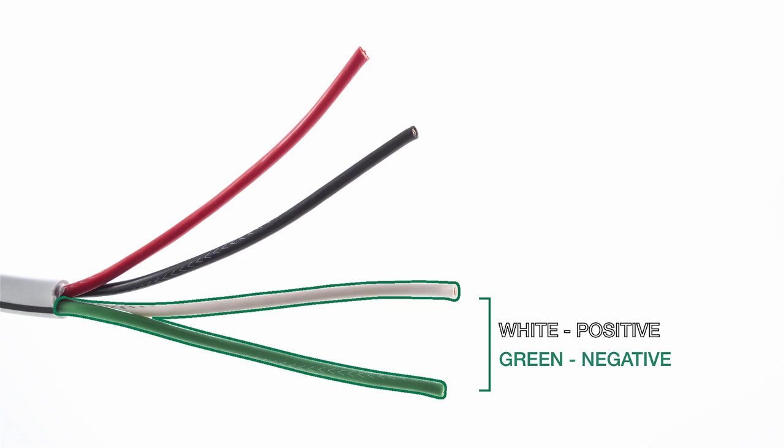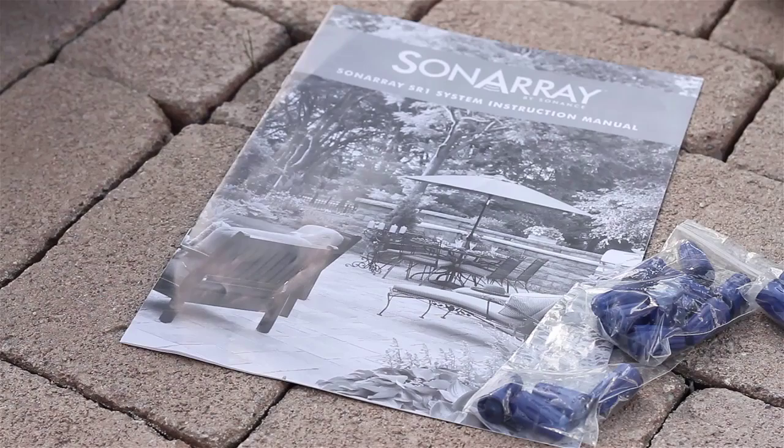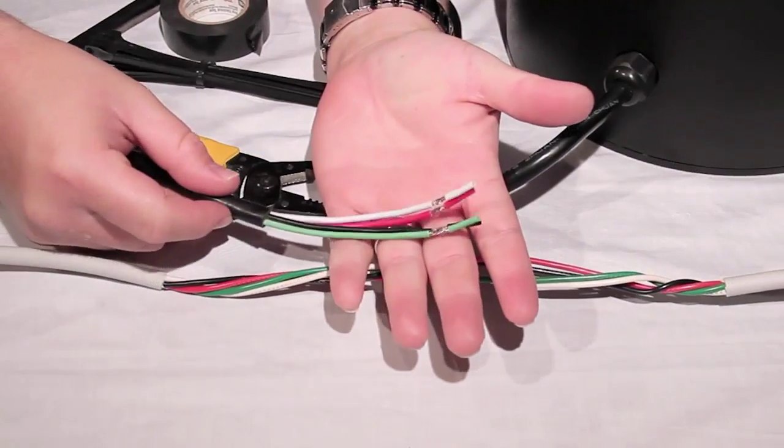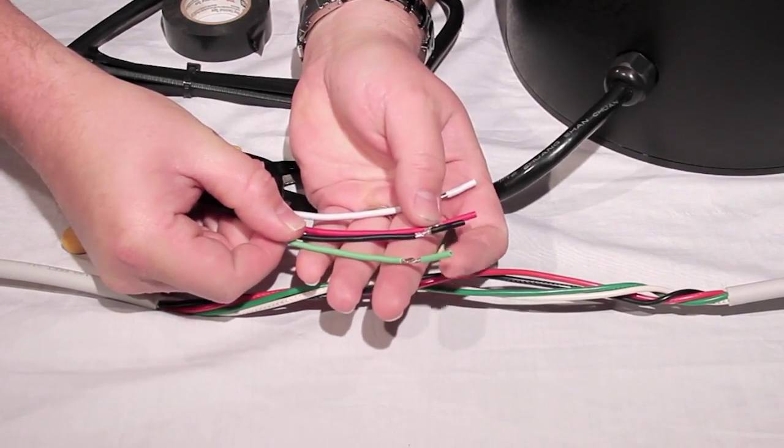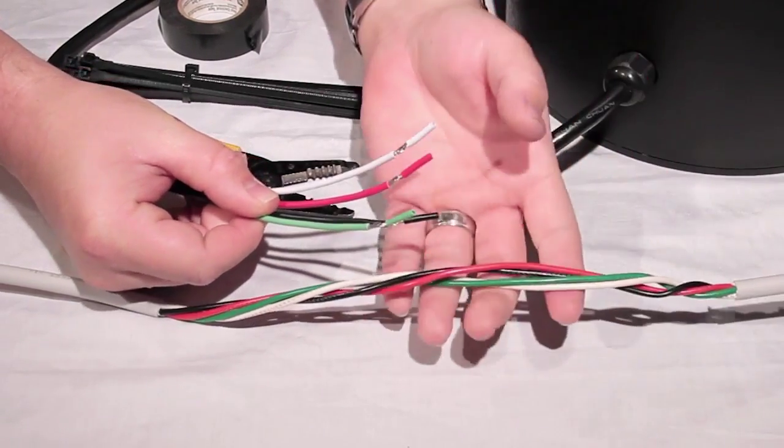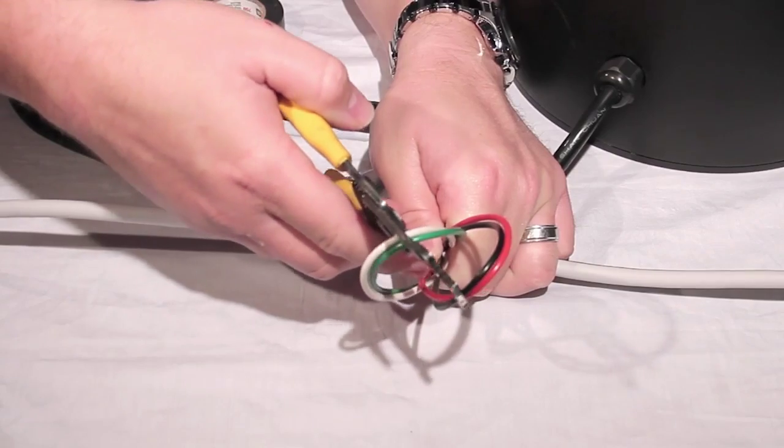You can always refer to the manual if you need more instruction. When it comes to wiring the subwoofer, you will notice the subwoofer has a four conductor wire and will connect to both the left and right channels of your amplifier or receiver. Connecting the subwoofer is easy.